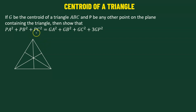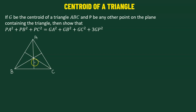In this problem, we have G, which is the centroid of triangle ABC. So we have a triangle ABC, and the centroid of this triangle is G. The centroid is defined as the point of intersection of the three medians of the triangle.